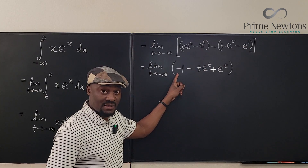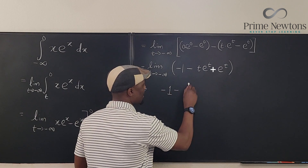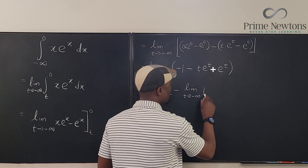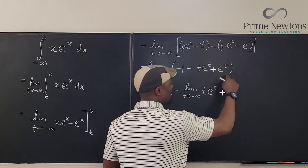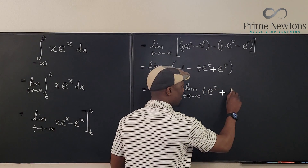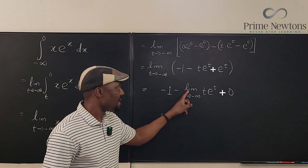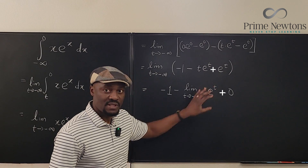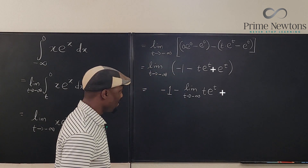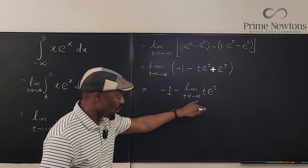Because eᵗ is a constant factor, this equals minus 1 minus the limit as t goes to negative infinity of t·eᵗ. The eᵗ term will go to 0 since e to negative infinity is 0. So the only remaining limit that's a problem is the t·eᵗ term.